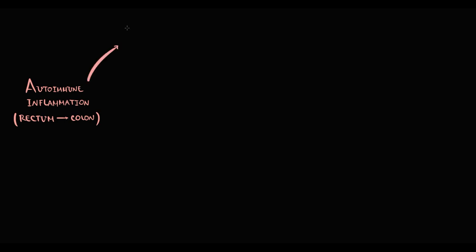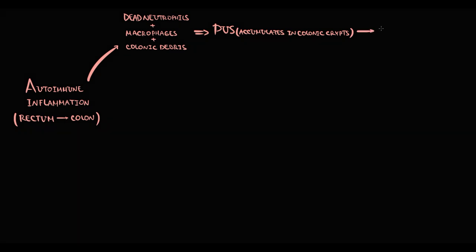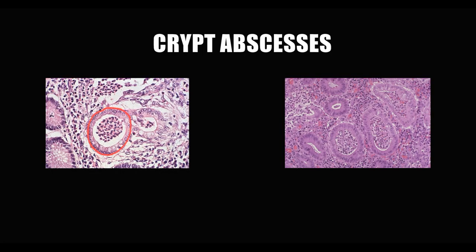Once inflammation occurs, neutrophils and macrophages come in and begin to destroy intestinal tissue. Neutrophils, macrophages, and colonic debris form a substance we call pus. A specific feature is that pus in ulcerative colitis accumulates inside the colonic crypts. A crypt with pus inside it we call a crypt abscess. These structures — with an outer layer of epithelial cells and neutrophils inside — are the signature histological feature of ulcerative colitis.